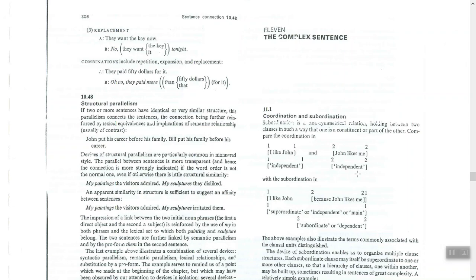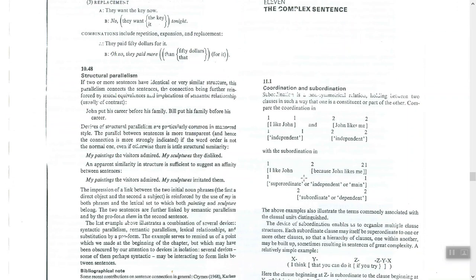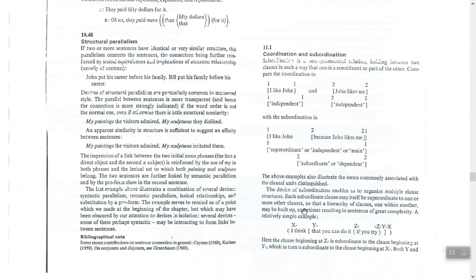When we say independent, it means the clause can stand alone. When we say dependent, it means it cannot stand alone — it needs support. With subordination, for example: 'I like John because John likes me.' Here, 'I like John' is the superordinate, independent, or main clause, and 'because John likes me' is the subordinate, dependent, or minor clause.